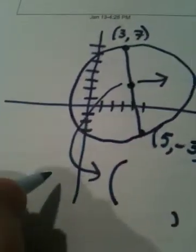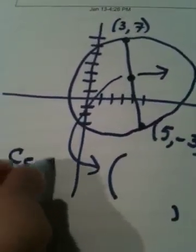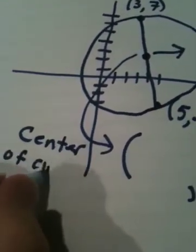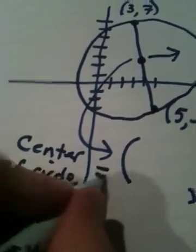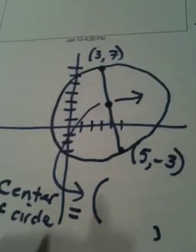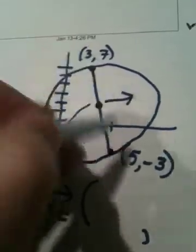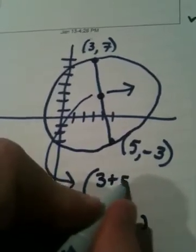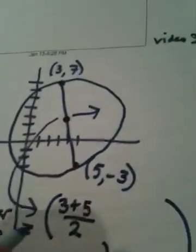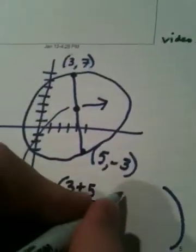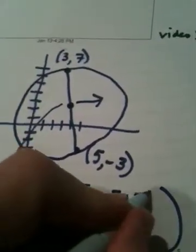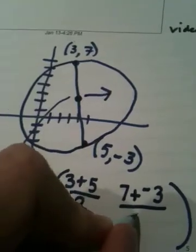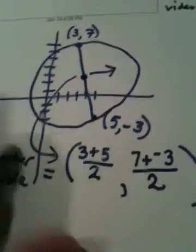The midpoint formula, which in this case is going to be the center of the circle. Remember how we always find midpoint. We average. We take the 3 and the 5 and we average them, which means add them together and divide by 2. We take the 7 and the -3, which means we add them together and divide by 2. That's how you average something.